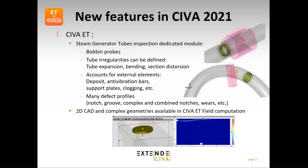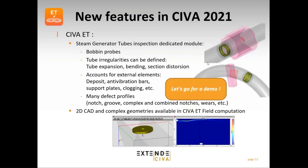The new steam generator tube module can account for many external elements encountered in SG tube inspections: anti-vibration bars, support plates with different geometries, potential deposits, and clogging. In terms of defect profiles, it can simulate simple circumferential and longitudinal defects, but also more complex ones such as combined notches and wears. Also new in SIVA EC 2021 is the capability to simulate 2D CAD geometries — for example, a coil over the bead of a weld showing the eddy current at the weld surface — currently open for field computation only, with plans to extend to inspection simulation in future versions.